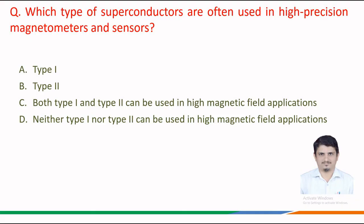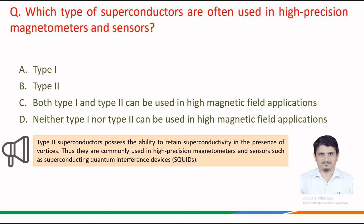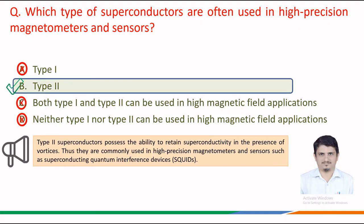To answer this question correctly, we may recall that type 2 superconductors possess the ability to retain superconductivity in the presence of vortices. Thus, they are commonly used in high precision magnetometers and sensors such as superconducting quantum interference devices — SQUIDs. Therefore, the correct answer is option b — type 2 superconductors are often used in high precision magnetometers and sensors.